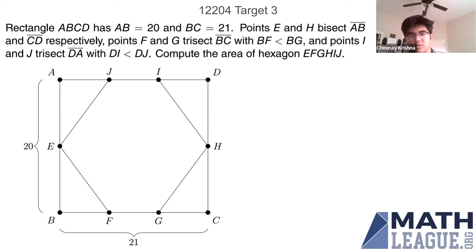So what we can do is we can find the area of the rectangle and then subtract off each of the triangles. So the area of the rectangle is 20 times 21 which is 420.